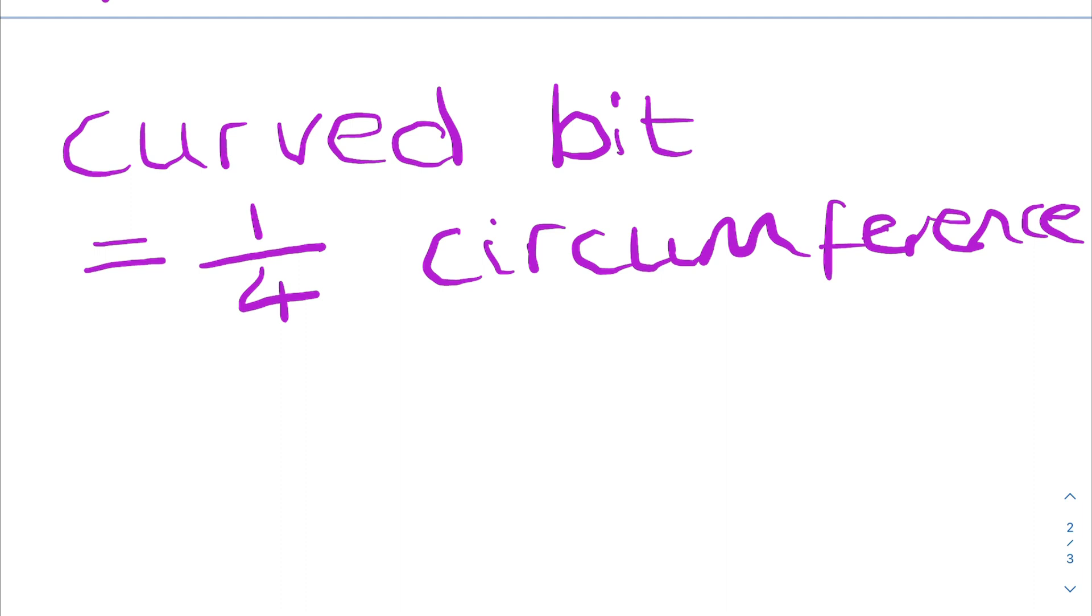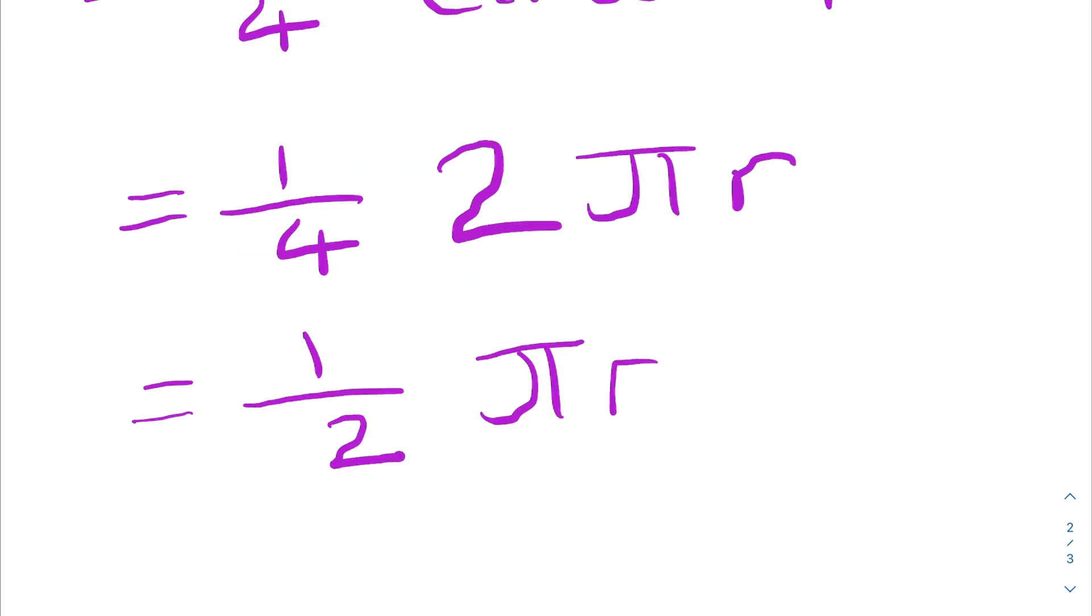Circumference is 2πr, so the curved bit is half πr. The vertical bit is 60 and the horizontal bit is 60, and that would give you the total answer.